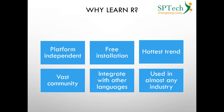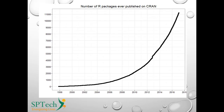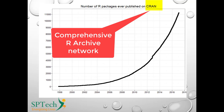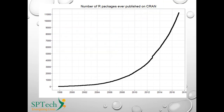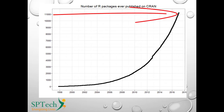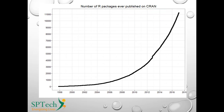Looking at the number of R packages published on CRAN — which stands for Comprehensive R Archive Network — in 1998 the number of packages was minimal. As years passed, by 2018 the number had reached 11,000, and by 2022 more than 15,000 packages. The versatility of a programming language depends on how many packages and library functionalities it has.